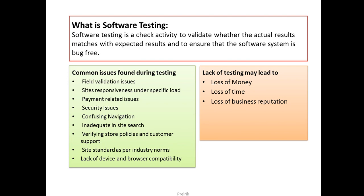Security issues include how the website encrypts the user ID and password and how it transmits from the front end to the server. Confusing navigation means a user shouldn't be confused while navigating from one page to another or from one tool to another — it should be in a sequence. Inadequate site search covers how your site returns results when a user searches for a product, including handling regular expressions and wildcard searches.